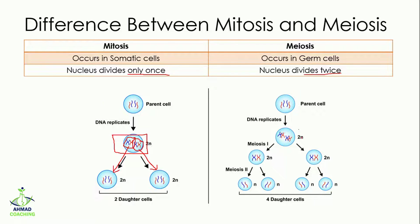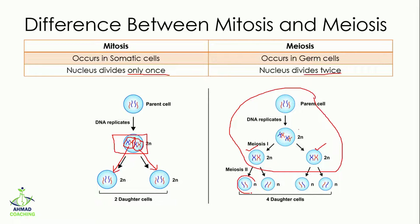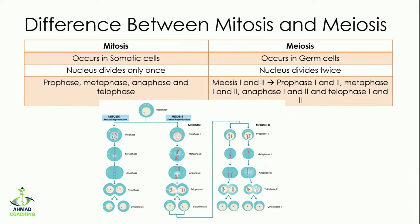In meiosis, the parent cell divides into two cells, similar to mitosis, but then these two cells divide further. Half the chromosomes move to one cell and half to the other. So the nucleus divides a first time, and then a second time.